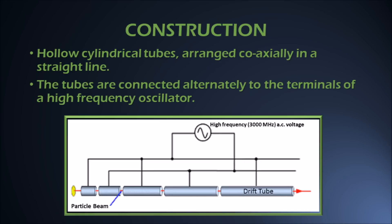The cylindrical tubes are connected alternately to the terminals of a high frequency oscillator. That is, first, third, fifth, seventh and so on, these are connected to one terminal of oscillator, and even number tubes, that is second, fourth, sixth, etc., are connected to the second terminal of oscillator.